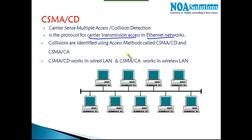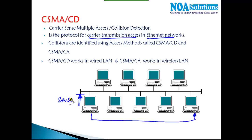CSMA/CD helps in collision detection and collision avoidance. If a device wants to send information, before it sends it will sense — that's what we call carrier sense — whether any other device is sending data or not. Just like before you cross the road you ensure no vehicle is moving, if something is going on you stop and wait. It does this because multiple devices are accessing the same media or cable — that's what we call a collision domain.